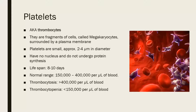Platelets are also known as thrombocytes. However, this term is inaccurate because it suggests that platelets are cells, but they are not actually cells — they are fragments of cells called megakaryocytes. Portions of the cytoplasm of megakaryocytes leave the cell, are surrounded by plasma membrane, and these are then called platelets.